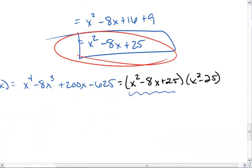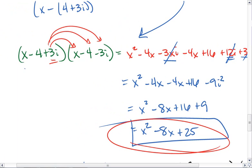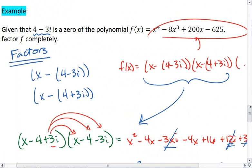Where this x squared minus 8x plus 25 is actually x. We go back up to our complex roots here.